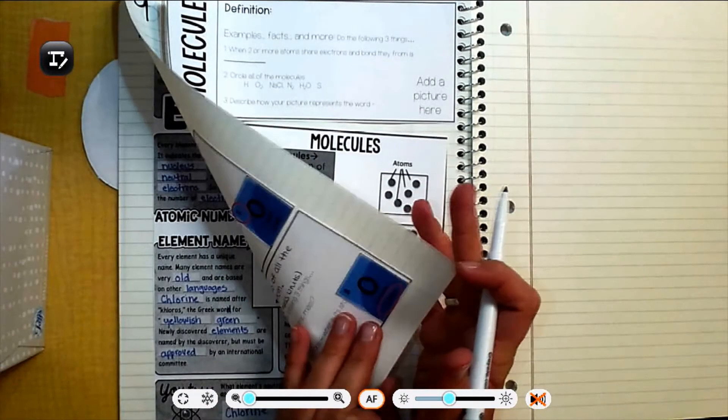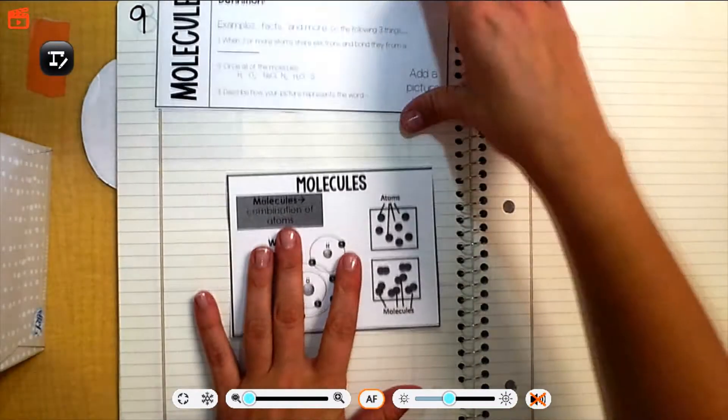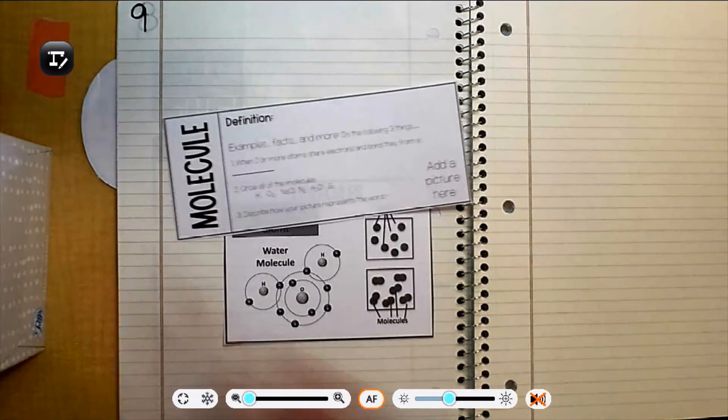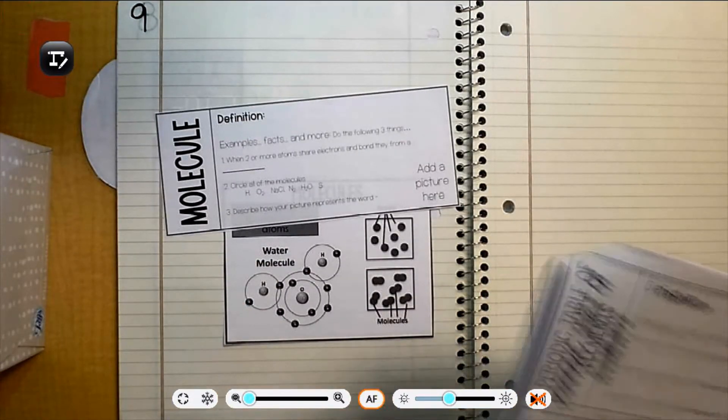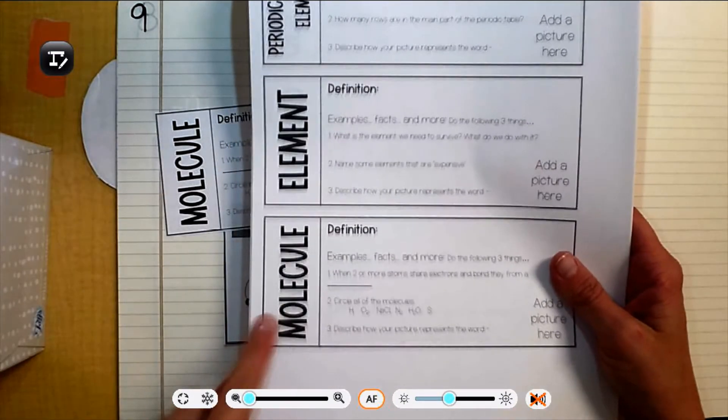Remember, that's on the back of page 8, which has our stuff about atomic number and mass. For this page, you're going to need this definition, molecule. It's in your Unit 2 envelope on the page that looks like this. It should be the only one left, molecule.